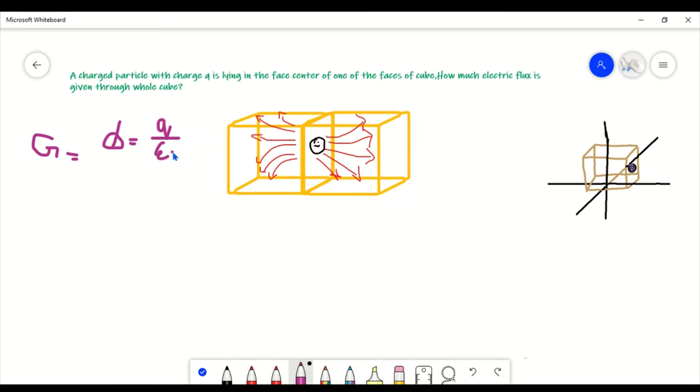Now what we find when sometimes you do Google, we don't find the exact answer. We find the answer which is Q divided by 6 epsilon naught for this question. You can do that as well but the answer, Q divided by 6 epsilon naught, which is incorrect.